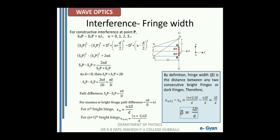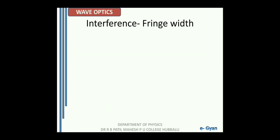We can get a similar expression if we work out for dark fringes. Take paper and pen and write down what has been explained, and you will get an idea of how this derivation works out. This is the expression for fringe width of the interference pattern: beta equals lambda capital D divided by small d.